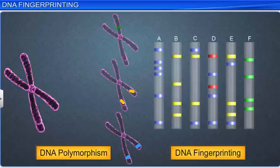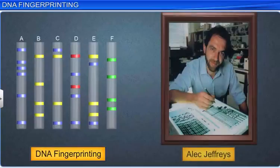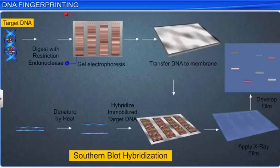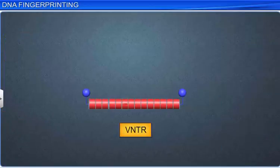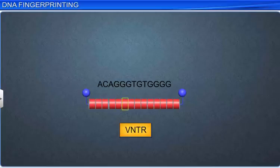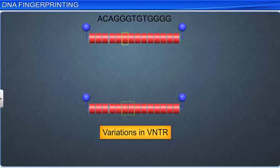The DNA fingerprinting technique was developed by Alec Jeffries. This technique involved southern blot hybridization, which used radio-labeled VNTR as a probe. VNTR is a small sequence of DNA arranged tandemly in several copy numbers, which varies from one chromosome to another in an individual. A very high degree of polymorphism is seen in the number of these repeats, due to which the size of the VNTR varies from 0.1 to 20 kilobytes.